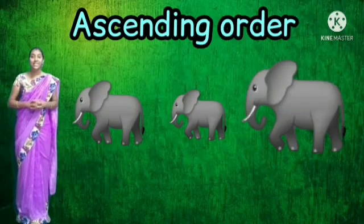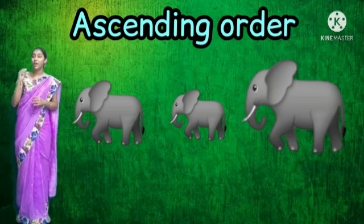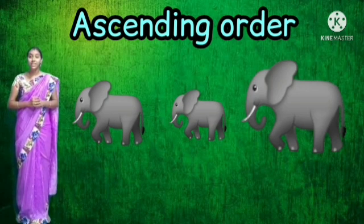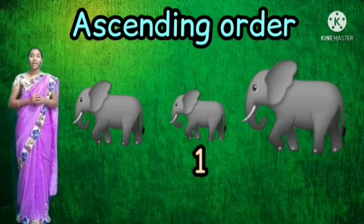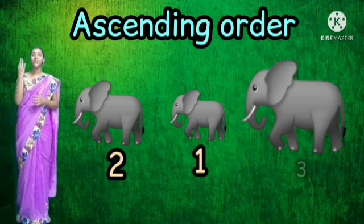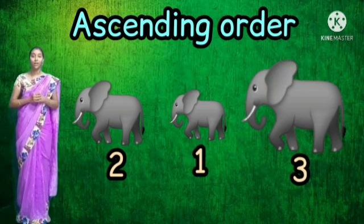Now look at the next picture — these are elephants. We are going to number them. The elephant which is very small in size, you need to write number one. Which elephant is very small? The elephant in the middle. So below that elephant, write number one. Which is somewhat bigger? The elephant in the first row — write number two. And the biggest elephant, write number three. Remember, ascending order: arrange from the smaller one to the biggest one.